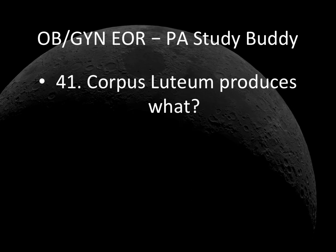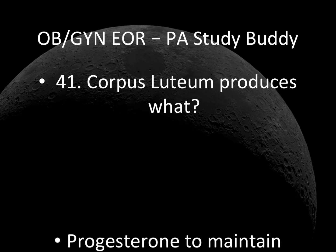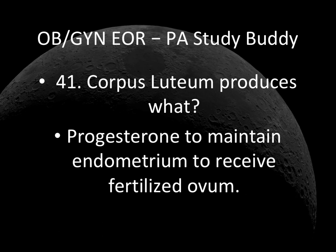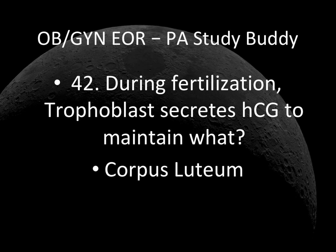Question 41: Corpus luteum produces what? It produces progesterone to maintain the endometrium to receive a fertilized ovum — corpus luteum produces progesterone. Question 42: During fertilization, trophoblasts create hCG to maintain what? To maintain the corpus luteum.